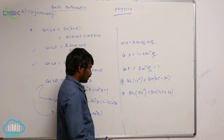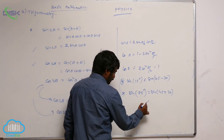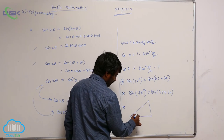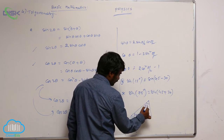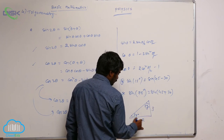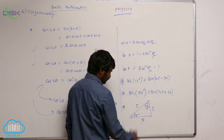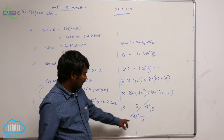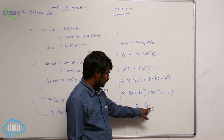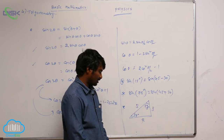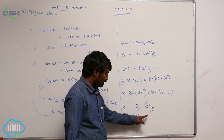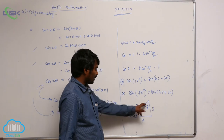One more very important value: 37 degrees and 53 degrees, using the 3-4-5 right triangle. For 37 degrees, the opposite side is 3 and the adjacent is 4. For 53 degrees, the opposite is 4 and the adjacent is 3. The hypotenuse, opposite to the 90-degree angle, is 5.